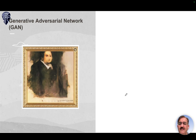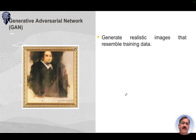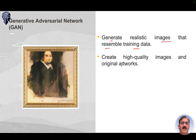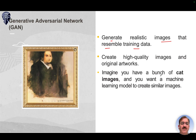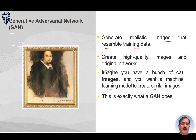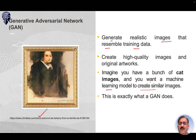Look at this image — you might think it's a painting. Generative Adversarial Networks (GANs) generate realistic images resembling training data and can create high-quality images and original artwork. Imagine having a bunch of cat images and wanting a model to create similar images of different cats — that's what a GAN does. This particular painting was created by a GAN model and was sold for approximately forty-two to forty-three million dollars.